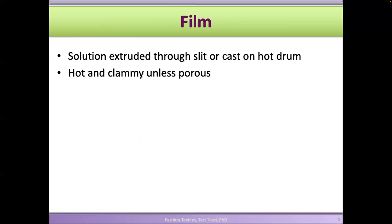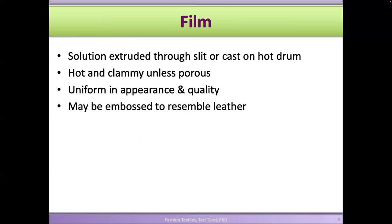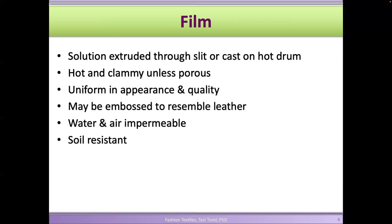For films, your solution is extruded through a slit or a cast, and you create a film structure when it dries out and coagulates. These are very uniform in appearance and quality because you're not using yarns, not interlacing or inter-looping anything — it's just a solution you dry out. You put it in a mold, let it dry, and you create a textile surface. You can emboss them to make it look like leather.